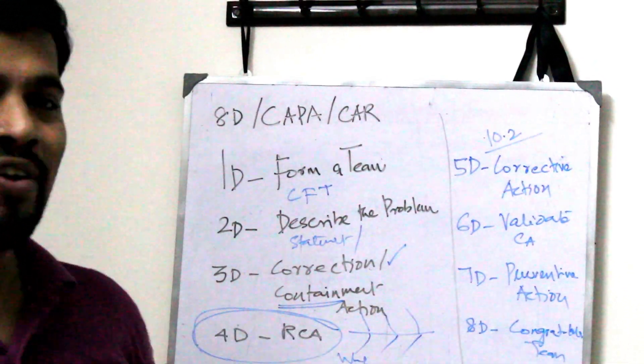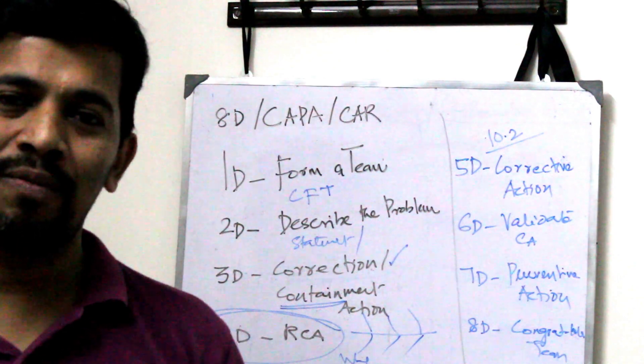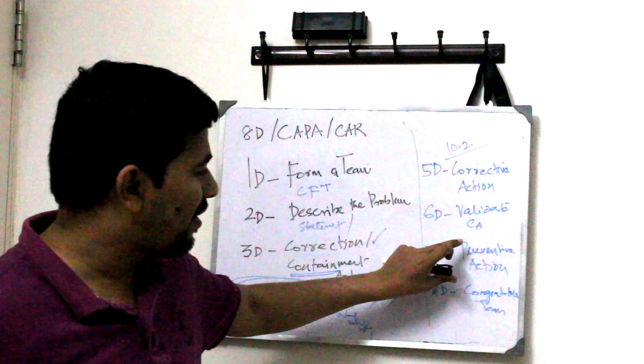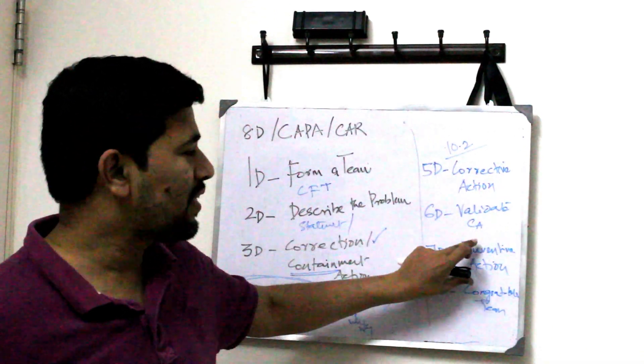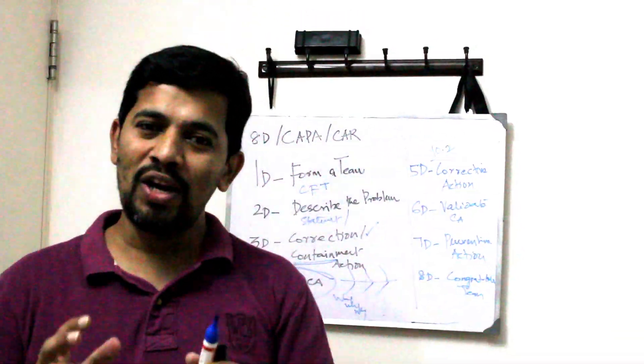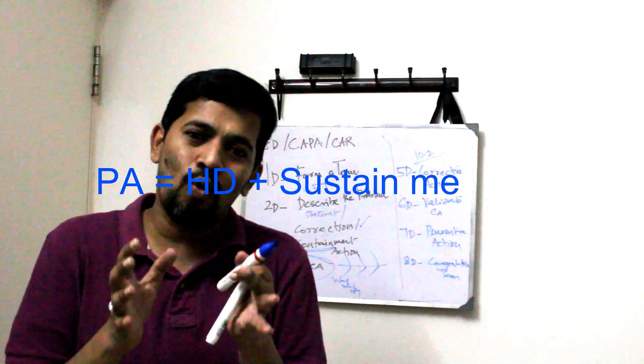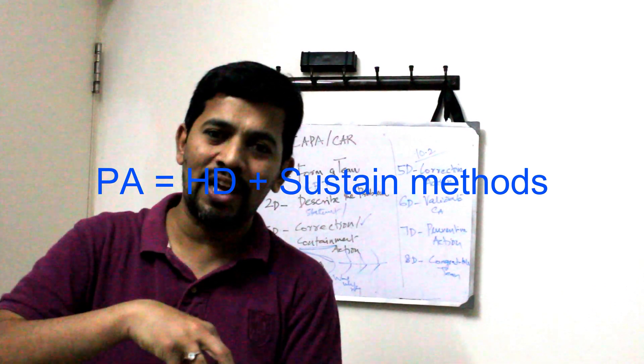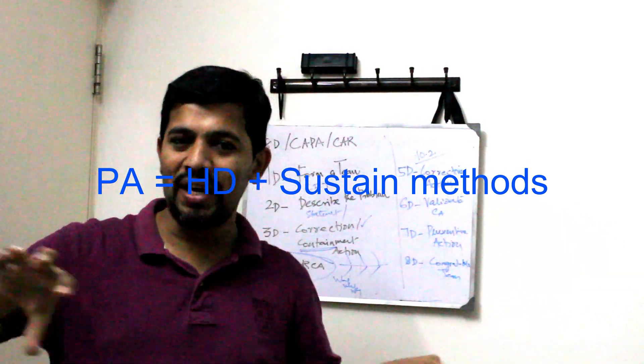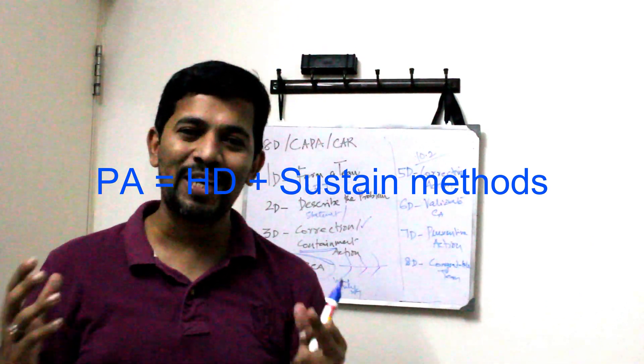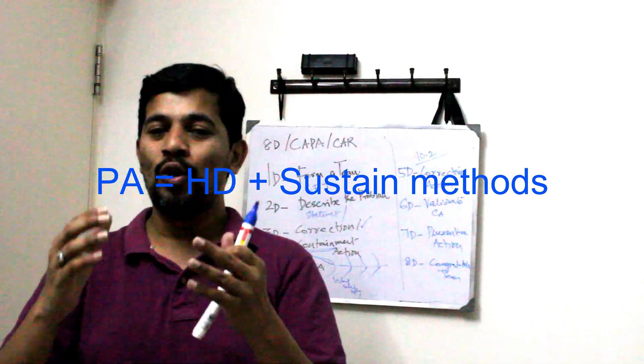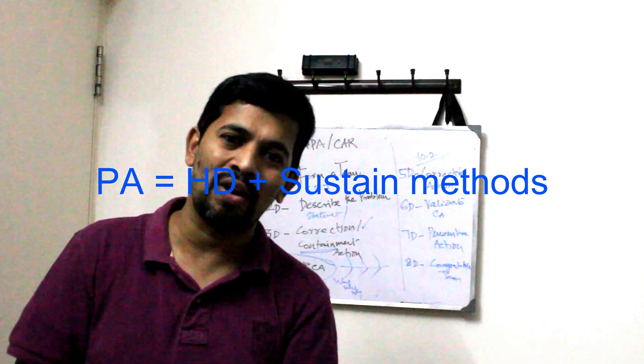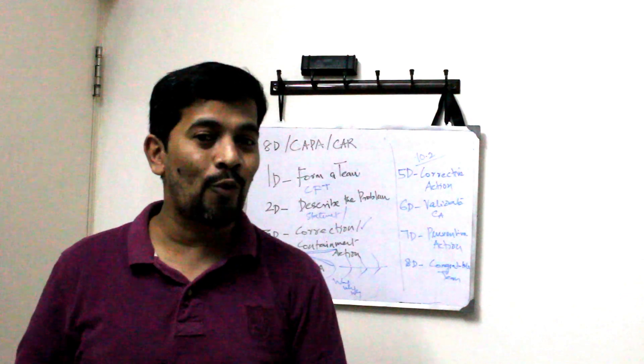And then you have 7D. 7D also it is called preventive action. So already the definition from the English context. The definition is already half done here. Corrective action. What is the definition for preventive action? Preventive action meaning like horizontal deployment or you have a sustenance method. Let's say the problem occurred in location A and you have similar processes there in location B and C. That means you are horizontally deploying it. That is called preventive action or you want to document it. You want to have a training mechanism be stronger. All these comes in preventive action.